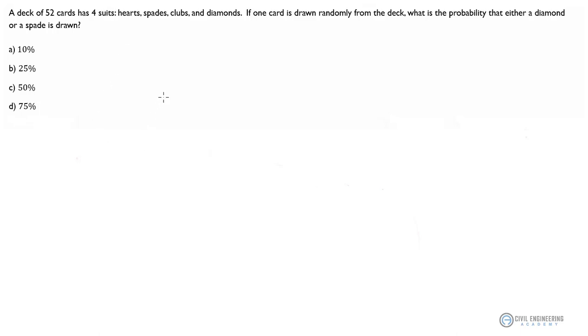Hey there engineers, welcome to Civil Engineering Academy. We're looking at a problem from probability today, specifically from the law of total probability. It reads like this: a deck of 52 cards has four suits—hearts, spades, clubs and diamonds.